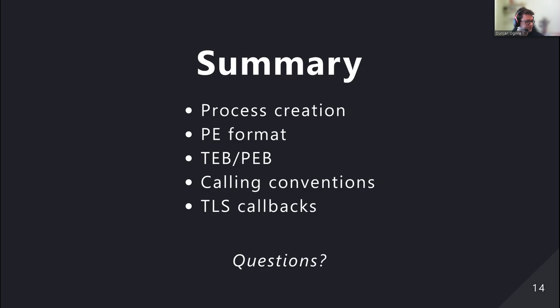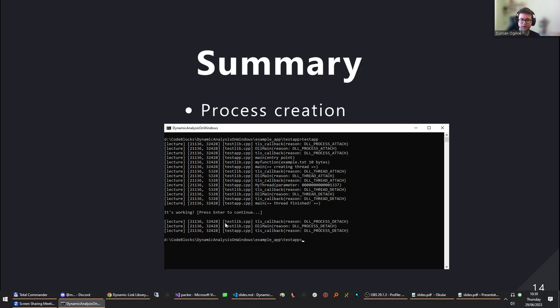To summarize what we've covered so far: process creation, PE format, the TEB and PEB, calling conventions, and TLS callbacks. The slides and recording will be uploaded for later review. One question: why does the TLS callback happen twice? It's not twice — you first get the TLS callback for the DLL file and then the TLS callback for the application.